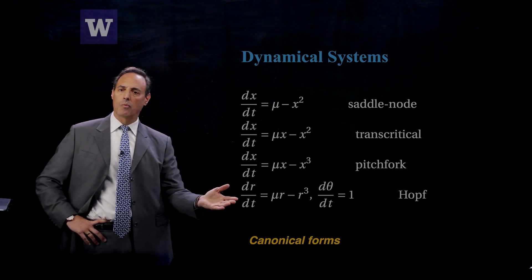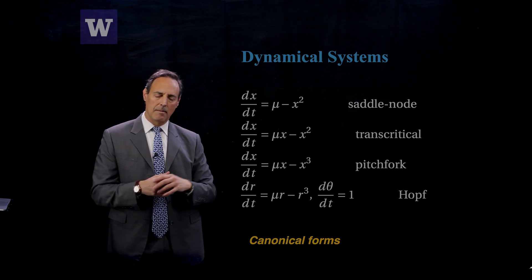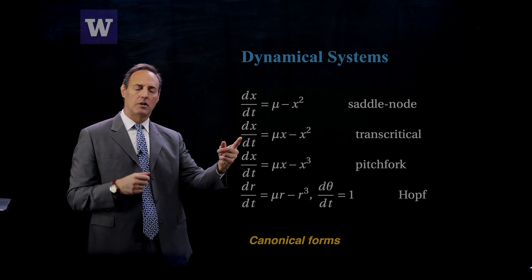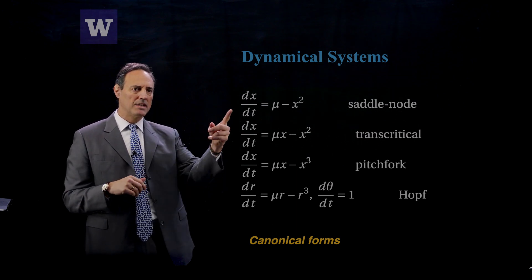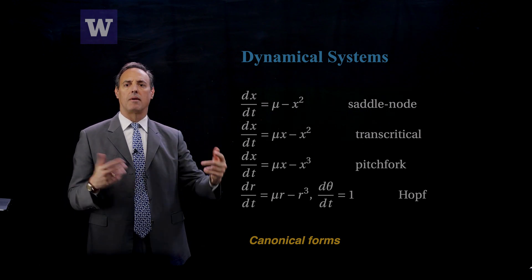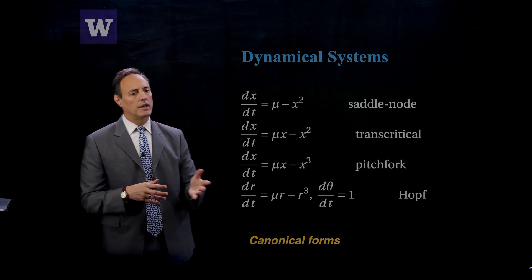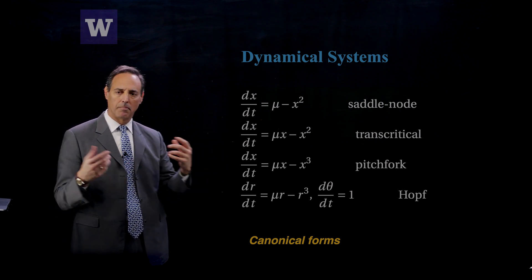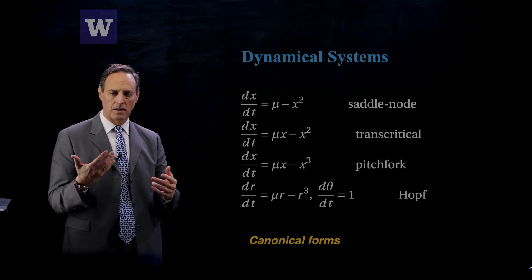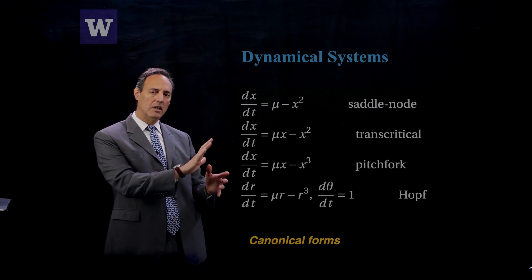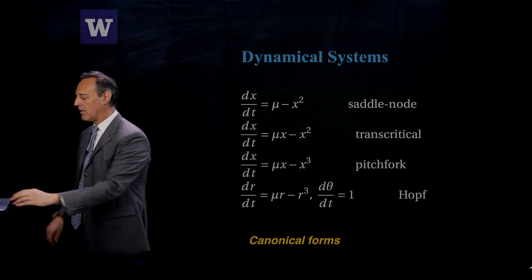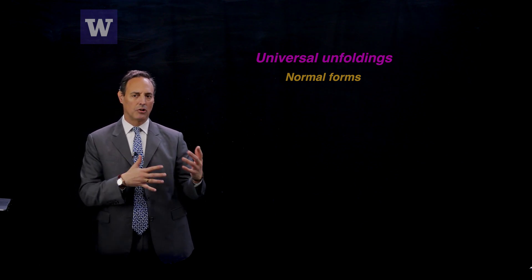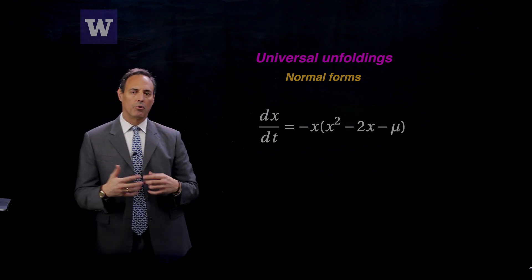The Hopf is the one where the bifurcation shows you some periodic dynamics on the backside. The pitchfork is when you get a bistable — two positive branches that arise. The transcritical is just a switch from one solution branch to another. The saddle node is that structure where you go from a top branch to a bottom branch, and it's unstable. These are very simple forms, and a real dynamical system is much more complex. But underneath, when you look near the bifurcation point, these are the canonical forms. These universal unfoldings or normal forms can be found for different systems — they take that form near the bifurcation point.